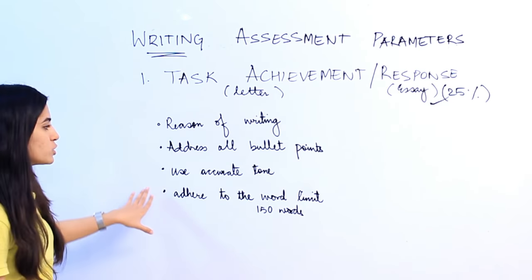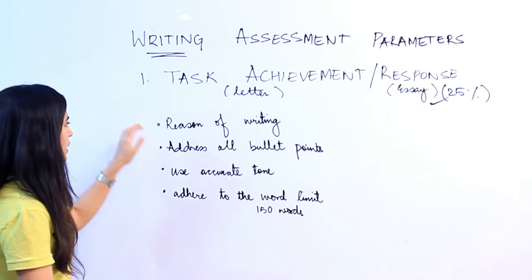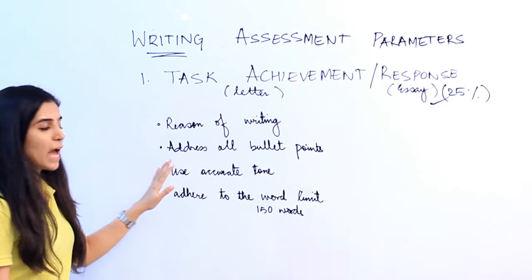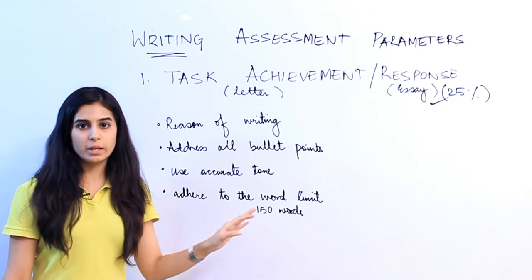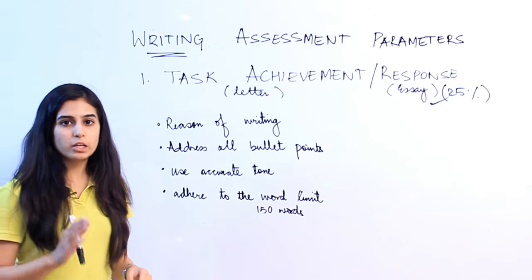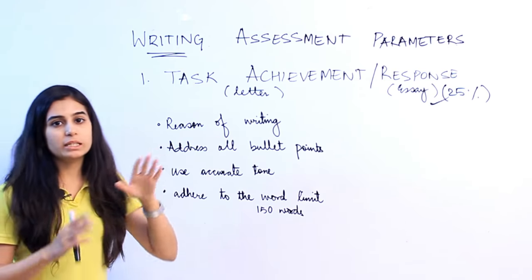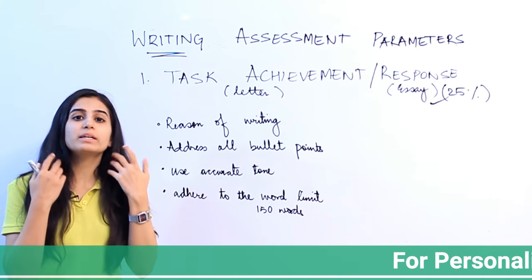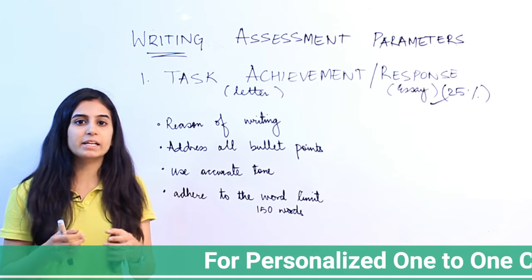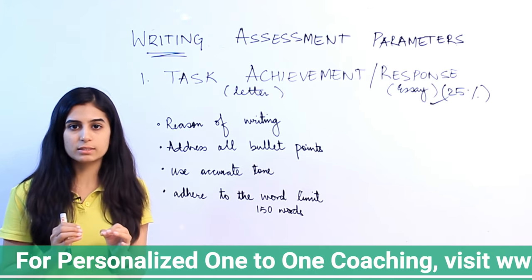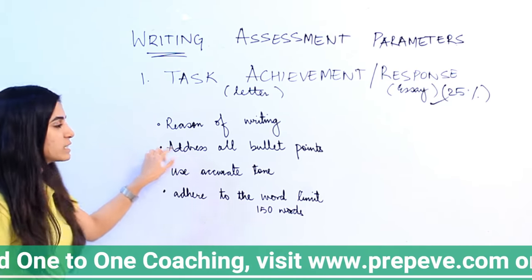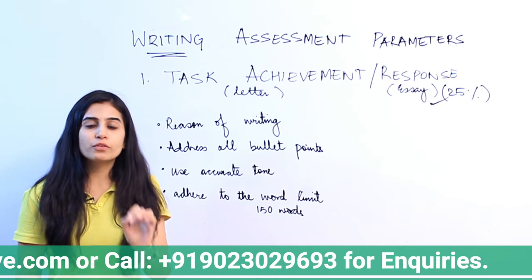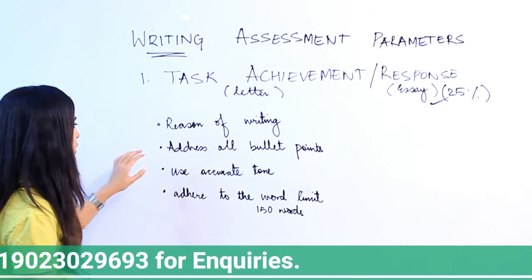These are the four factors on which your task achievement is assessed. Number one: reason for writing the letter. Number two: addressing all bullet points. Number three: using accurate tone. Number four: adhering to the word limit. For number one — the reason for writing the letter — you don't randomly write a letter. There is a reason why you are writing it, and that reason has to be clear so that as soon as somebody opens your letter, they understand exactly why you wrote it.